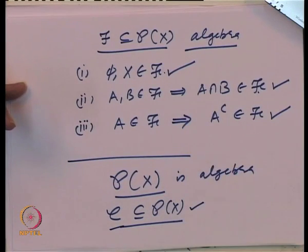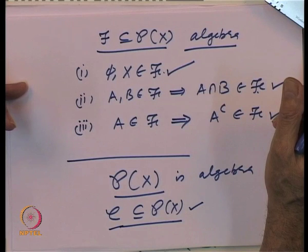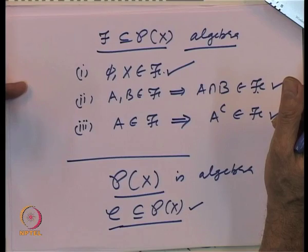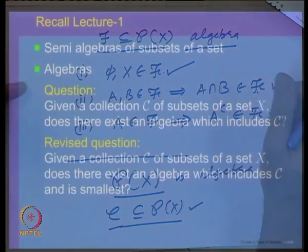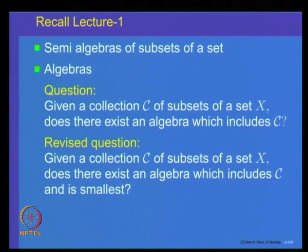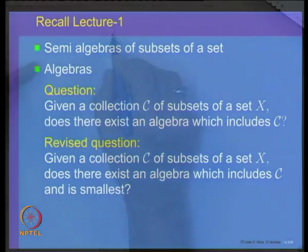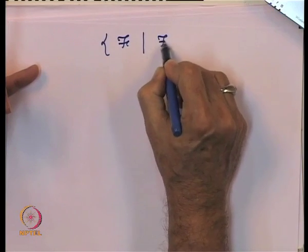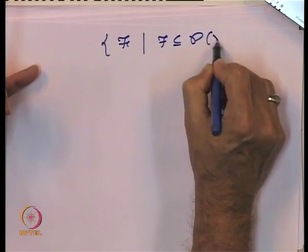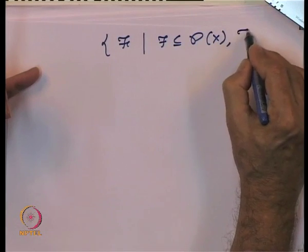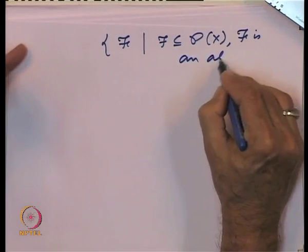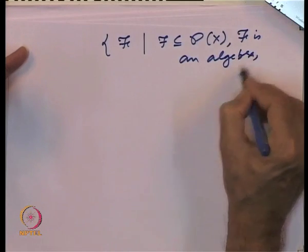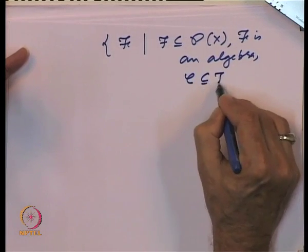We should modify our question: given a collection C of subsets of a set X, does there exist an algebra which includes C and is the smallest? To answer that, let us collect together the collection of all F such that F is an algebra of subsets of X and C is contained in F.